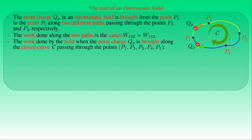The test charge QP can also be brought along the closed path starting at P1, passing through P3, P2 and P4, and finishing at P1. The total work done along the closed path is the sum of the work along P1→P3→P2 and the work along P2→P4→P1. The latter equals minus the work along P1→P4→P2, which also equals the work along P1→P3→P2. As a result, the total work done by the conservative force along the closed path vanishes.